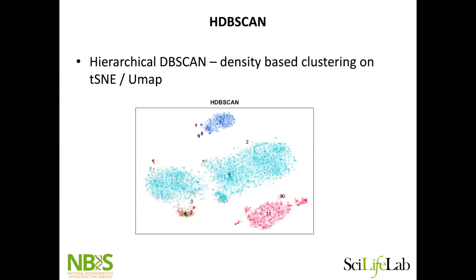Some people use density-based clustering — DBSCAN — but it's a hierarchical DBSCAN. Basically, you take your UMAP, your t-SNE, whatever, and you identify clusters where the density in this 2D space is high.